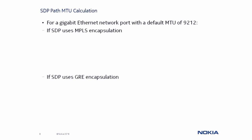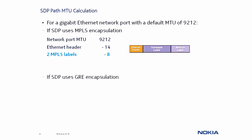Let's take a closer look at how the SDP Path MTU is calculated. If an SDP egresses on a Gigabit Ethernet port with an MTU of 9212, what is the SDP Path MTU value? That answer is based on whether the SDP is using either MPLS or GRE encapsulation. For MPLS encapsulation, we start with the network port of 9212, subtract 14 bytes for the Ethernet header, subtract 8 bytes for two MPLS labels, which gives us an SDP Path MTU of 9190 bytes.